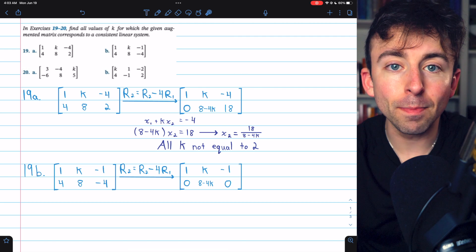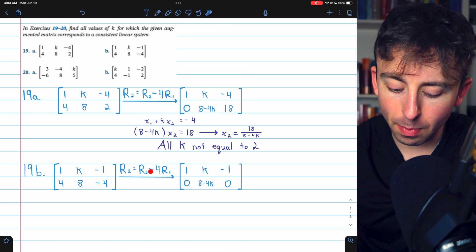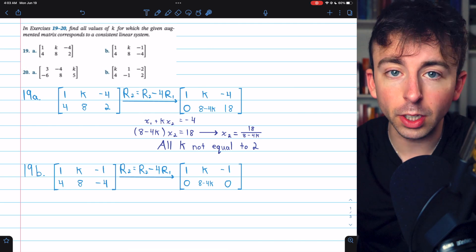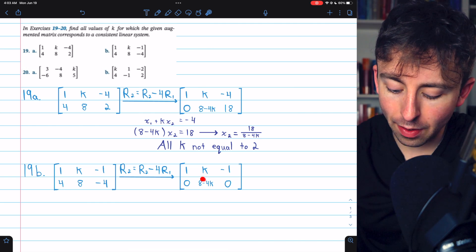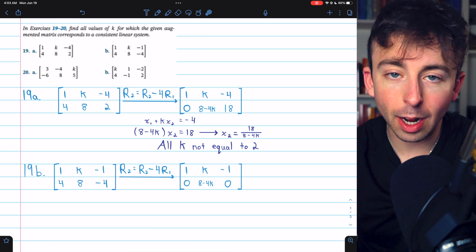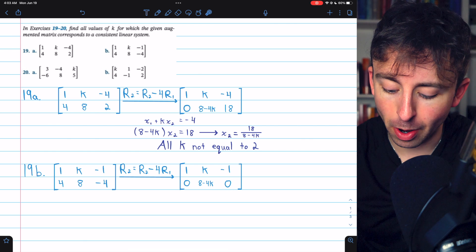Here is 19b, very similar. This is the augmented matrix. We'll begin by subtracting 4 copies of row 1 from row 2 to get a 0 below that leading 1. So again, we have 8 minus 4k, and negative 4 minus 4 times negative 1 is negative 4 plus 4, which gives us a 0 there.